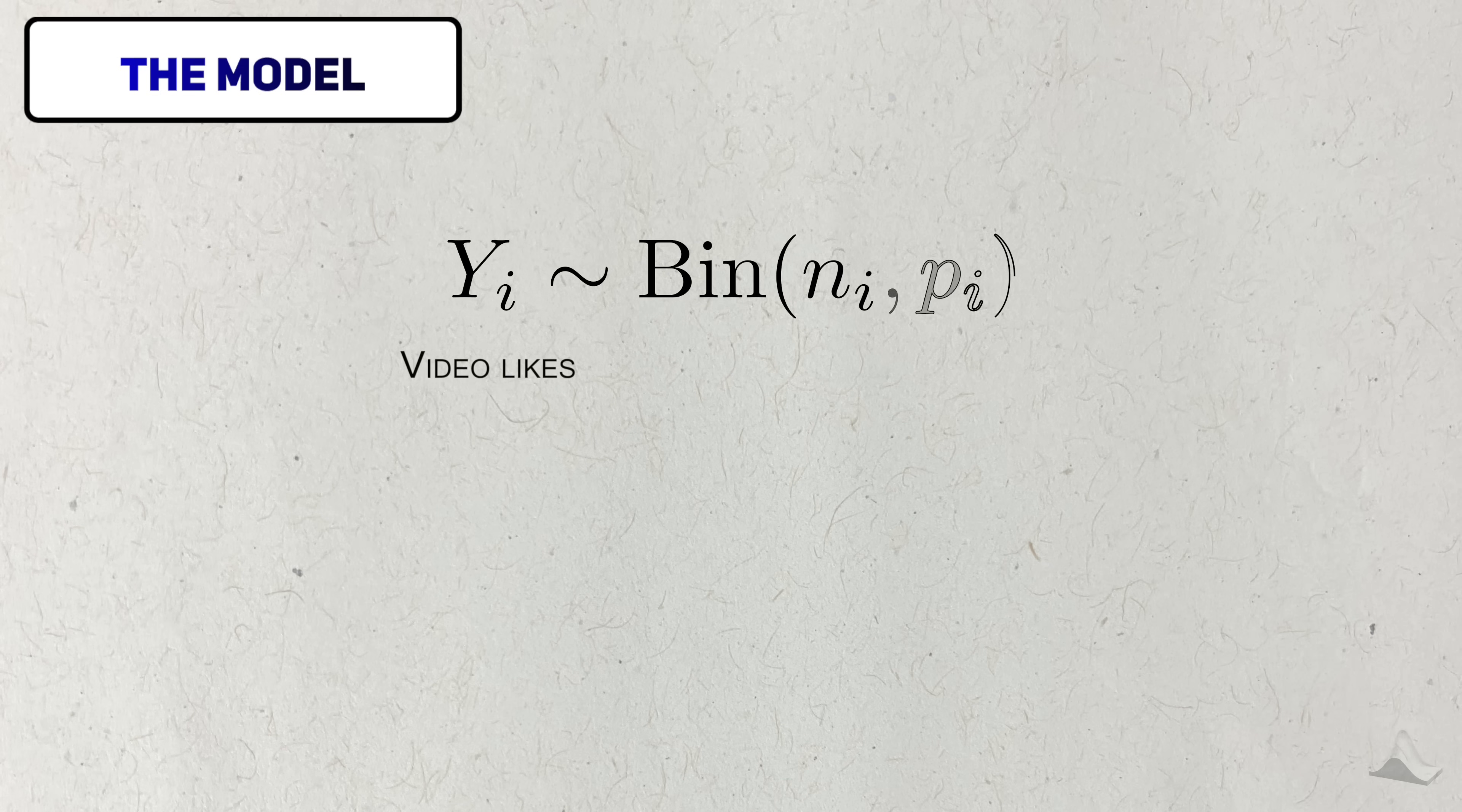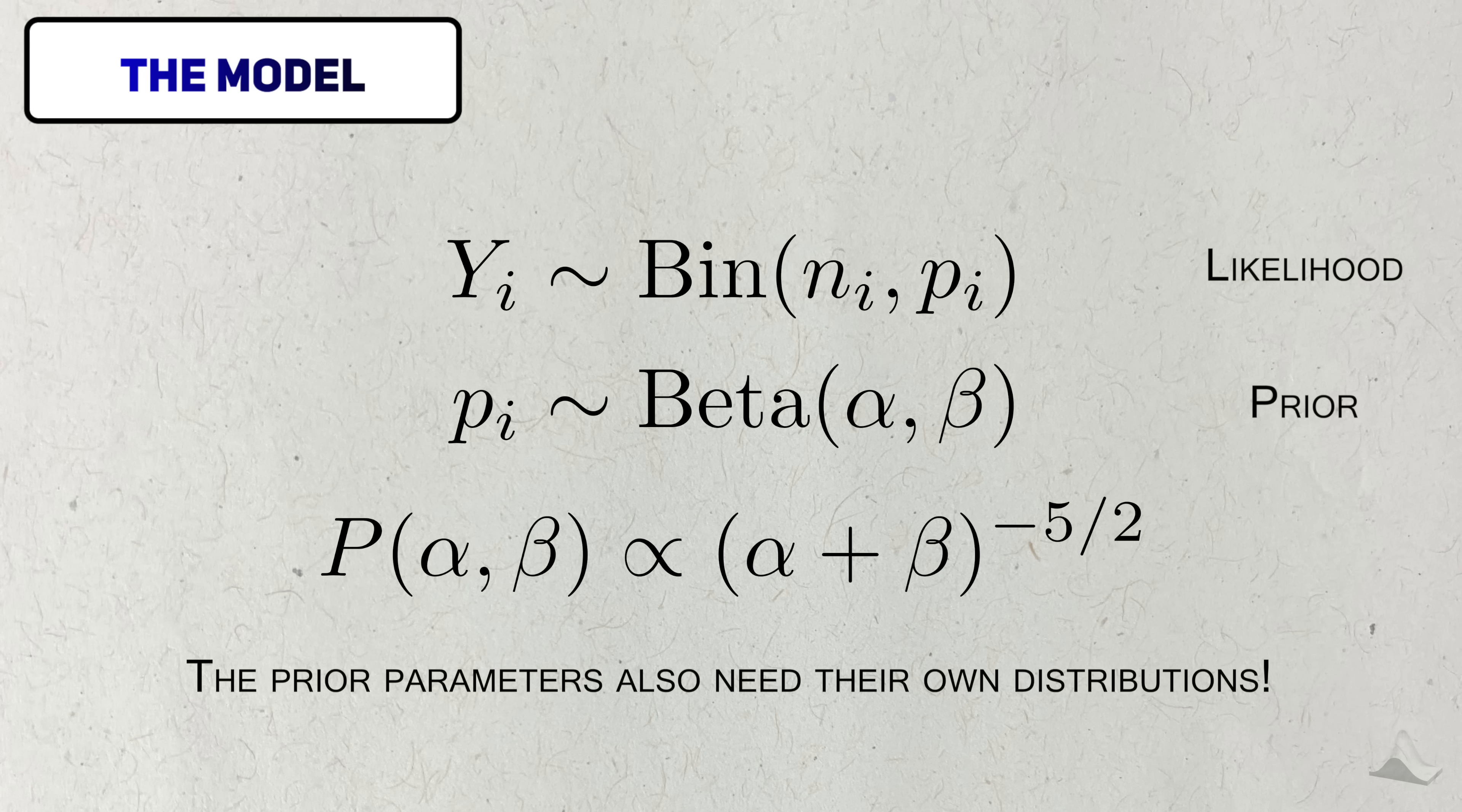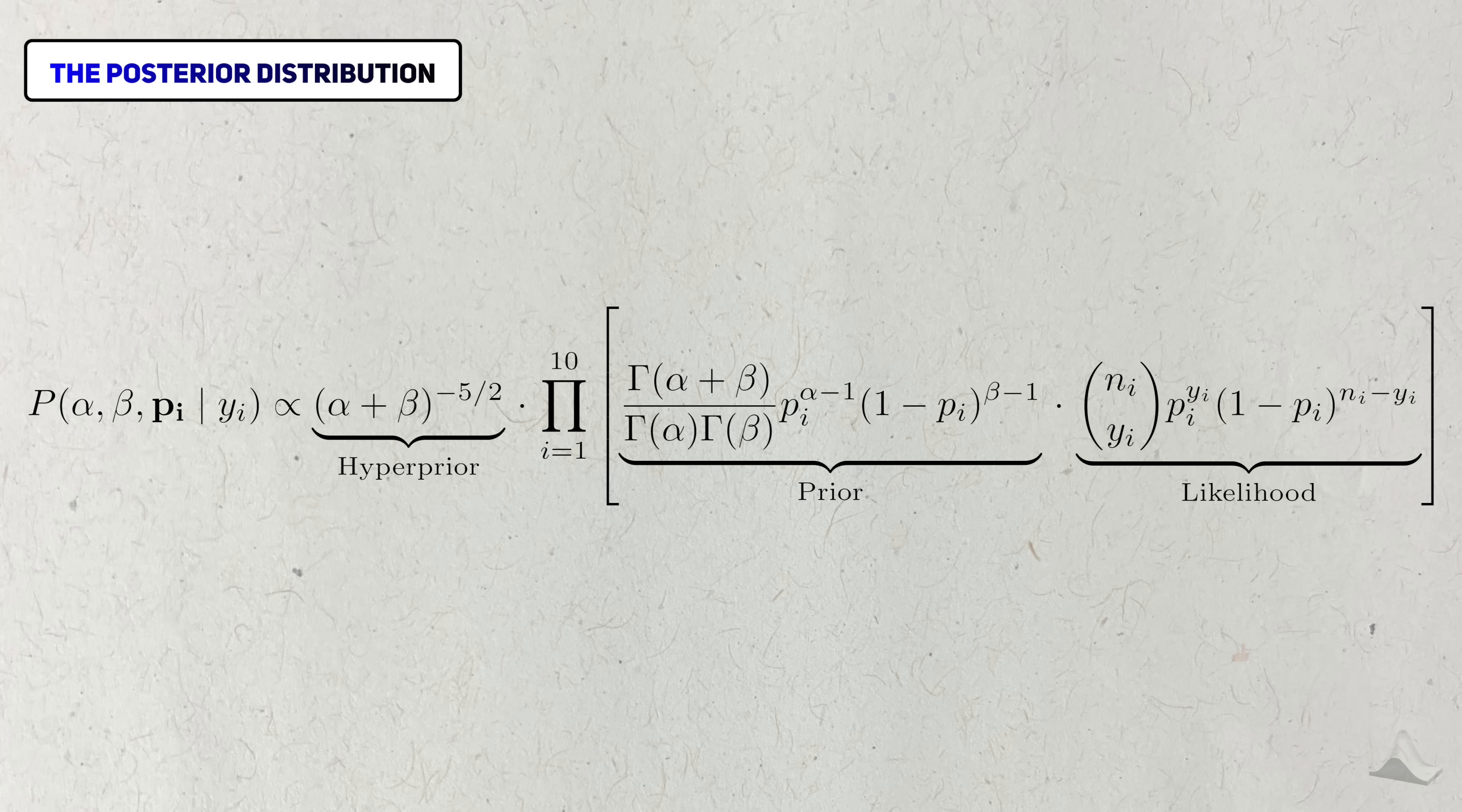I'm going to use a Bayesian hierarchical model to analyze the data. This will let me use the data from all my videos while enabling me to get a single ratio to summarize. I'm going to treat each video like a binomial distribution. This corresponds to the likelihood of the data. Next, I'm going to assume that these like-to-view ratios come from their own distribution. In this case, a beta distribution, which has its own parameters alpha and beta. This is what makes the model hierarchical. This beta distribution forms part of the prior. But since I'm doing a fully Bayesian analysis, the parameters for this beta distribution also need their own prior. These are also called hyperpriors, and I have no idea what the values for these could be. So I'm going to use a particular form for the prior that was recommended by Andrew Gelman. Taken together, the posterior distribution looks like this. Proportional to the likelihood of all the videos, the distribution of all the proportions, and the hyperpriors. Altogether, this posterior distribution consists of 12 parameters.